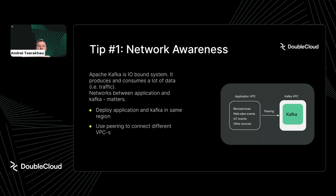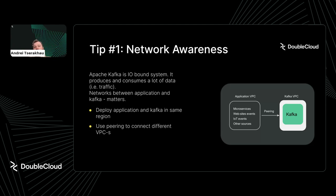Usually Kafka is not on public networks — it lives in a private network, so you need to connect your application to Kafka using some technique. For Kafka, the best approach is VPC peering because it's essentially free. You have your application network and your Kafka network, and if they are in different networks, you can peer them. That's how you make Kafka accessible to your application without any extra cost.